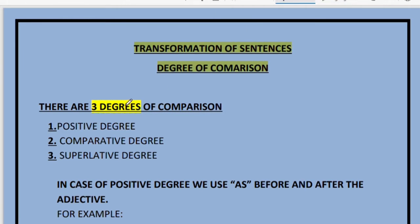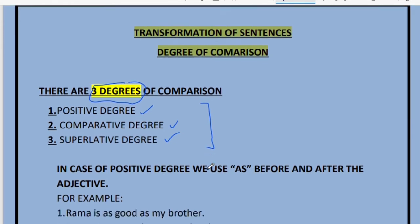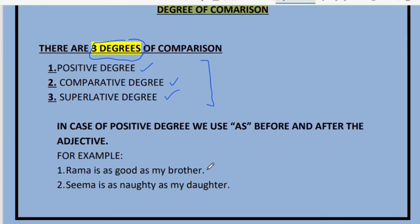There are three degrees of comparison — the positive degree, comparative degree, and the superlative degree. The first few lines will just cover the basics. For each of these degrees, there is something specific which must be followed.